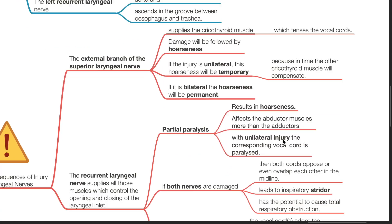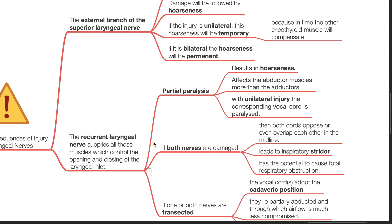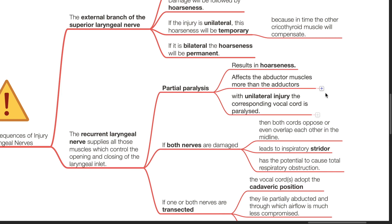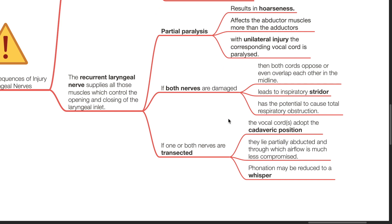The recurrent laryngeal nerve supplies all those muscles which control the opening and closing of the laryngeal inlet. Partial paralysis results in hoarseness of voice and affects the abductor muscles more than the adductors. With unilateral injury, the corresponding vocal cord is paralyzed. If both nerves are damaged, then both cords oppose or even overlap each other in the midline, leading to inspiratory stridor and potential total respiratory obstruction. If one or both nerves are transected, the vocal cords adopt the cadaveric position, lying partially abducted, through which airflow is much less compromised. Phonation may be reduced to a whisper.